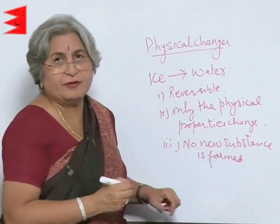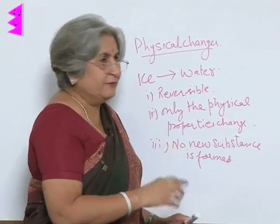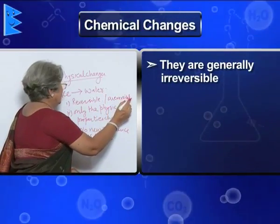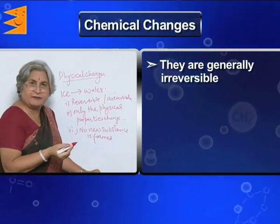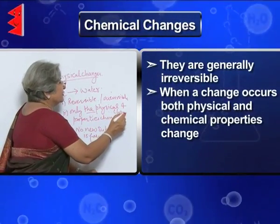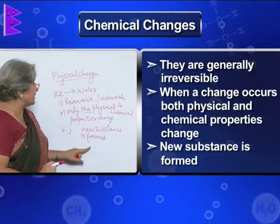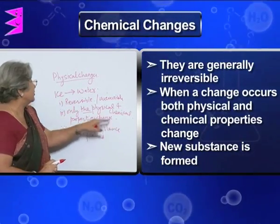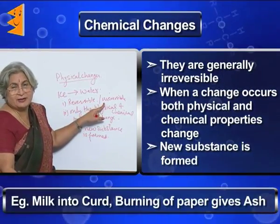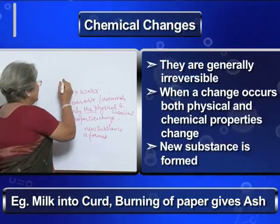On the other hand, if you burn a paper or a matchstick, from the ash we cannot get back the paper — which means it is irreversible. The ash has entirely different chemical properties, so not only the physical but also the chemical properties change, and a new substance is formed. When a new substance is formed, both physical and chemical properties change, and the change is irreversible — like milk changing to curd or paper changing to ash on burning — then it is a chemical change.